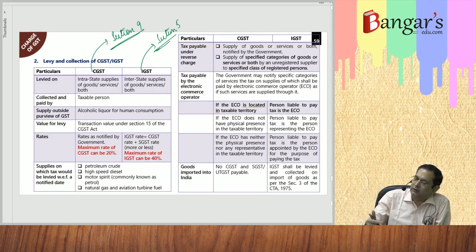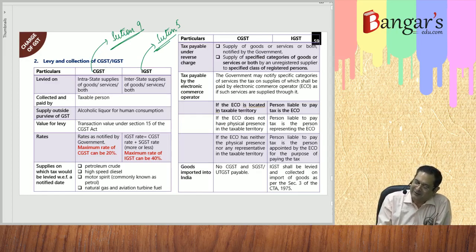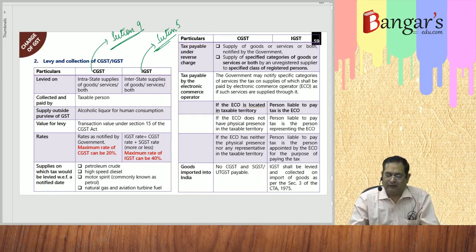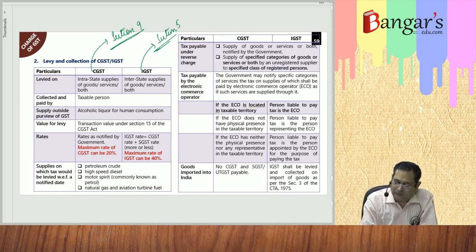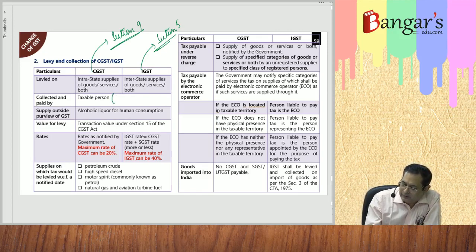The summary will be useful only when you have studied the entire subject and the entire chapter. Some students believe they can pass the exam by studying only the summary — they will get only summarized marks. GST is collected and paid by a taxable person — that is, a person who is registered or is liable to be registered.